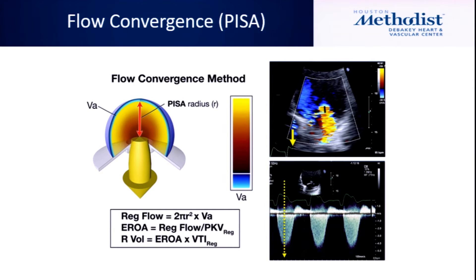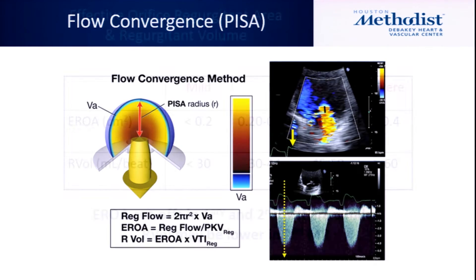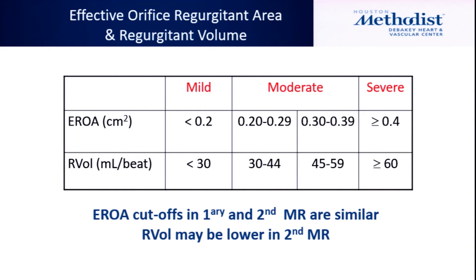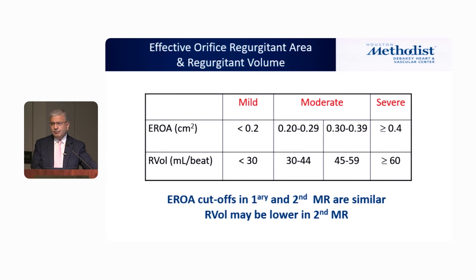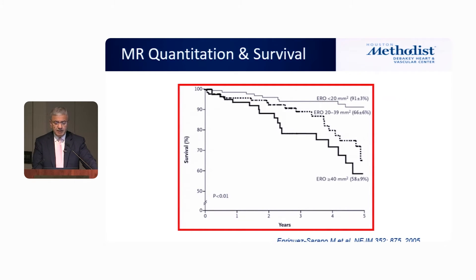You hear about PISA and flow convergence — it is an important parameter but not without its issues. The more flow convergence you see from the ventricle going into the atrium, the more severe the regurgitation. Above 0.4 cm² it is usually severe; significance starts above 0.3 cm². The same cutoffs apply for both primary and secondary mitral regurgitation. Regurgitation volume greater than 60 ml has significant prognostic implications for effective regurgitation orifice area.